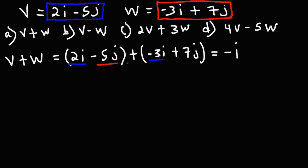And then negative 5j plus 7j, that's going to be plus 2j. So v plus w is negative i plus 2j.